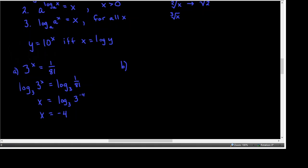Let's look at B: log base 2 of x equals negative 4. In this one, since it's log base 2, we can use its inverse and exponentiate both sides of the equation as a power of 2 — I picked 2 because it's the base of our logarithm. Because of the inverse nature of 2 to the something and log base 2 of something, this becomes x. Then we just need to simplify the other side: that becomes 1 over 2 to the 4th, which is 16 in the denominator, so 1/16.